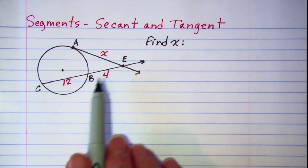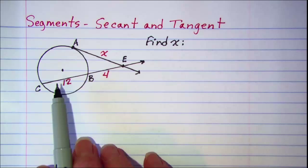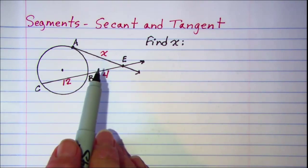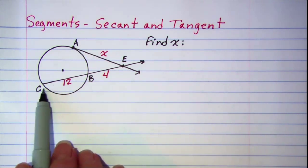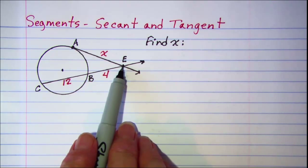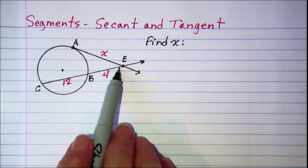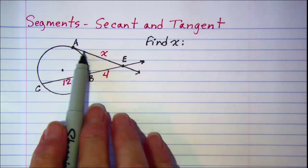We have a theorem that says if a secant and tangent intersect outside the circle, the product of the secant segment and the external secant segment is equal to the square of the tangent segment.